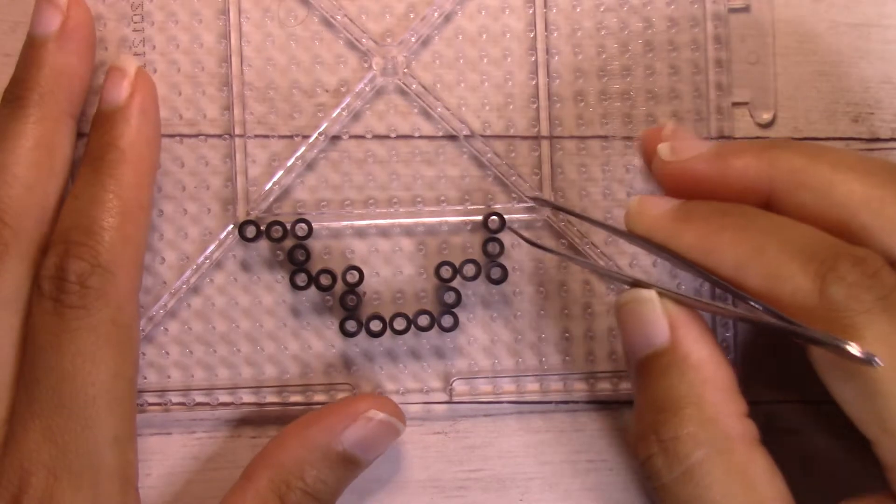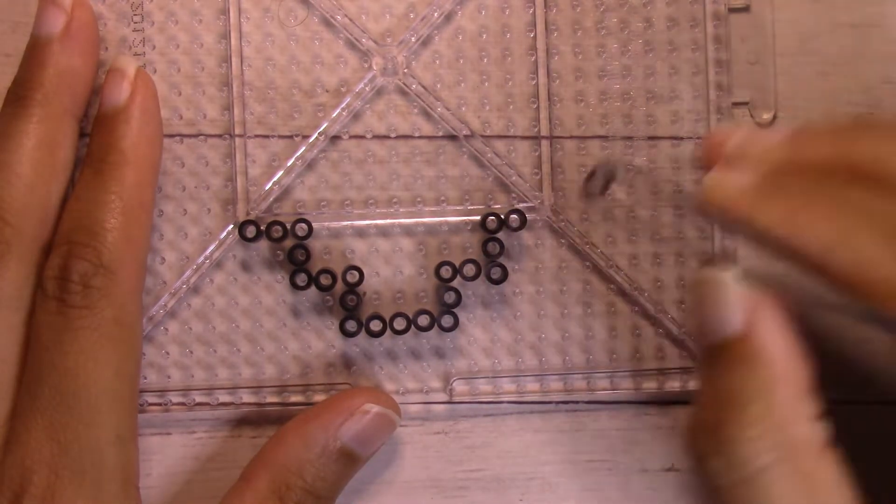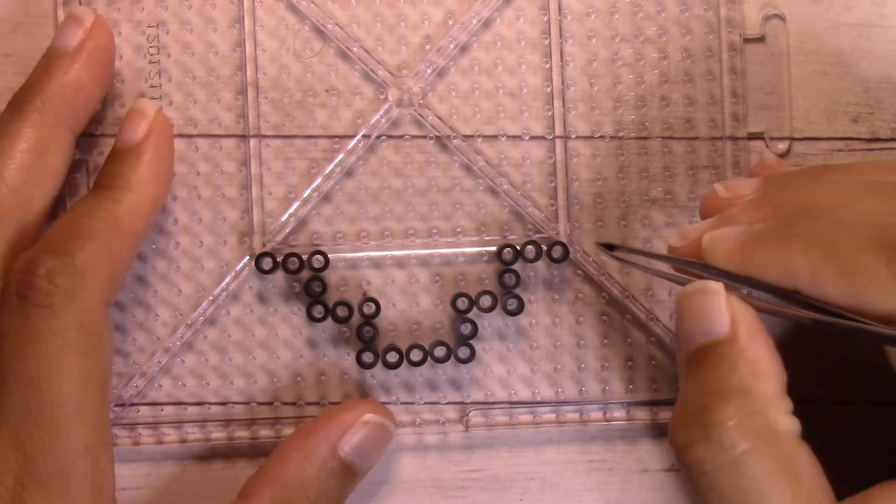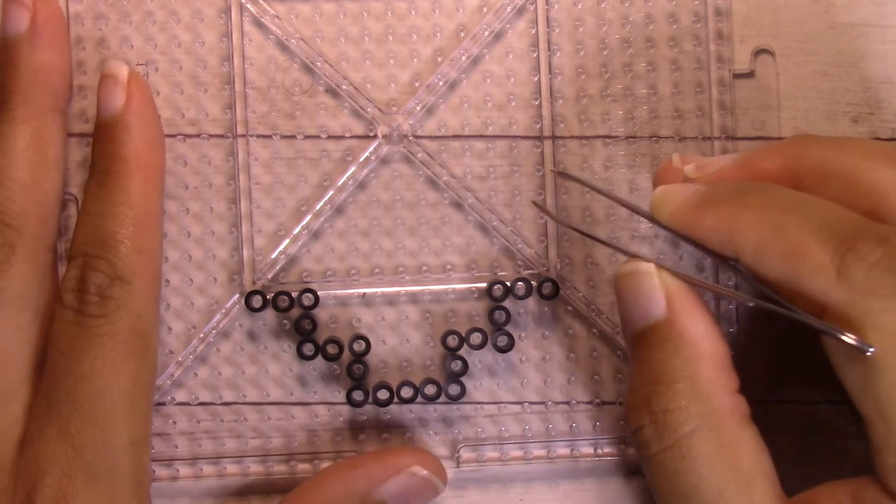Then two above that so there are three, and two to the right so there are three. On each side I'm going to work up so there are 15 beads each.